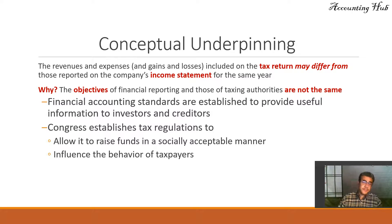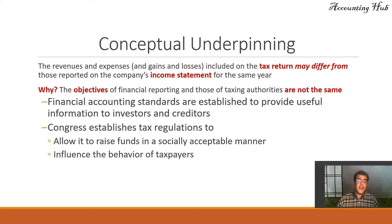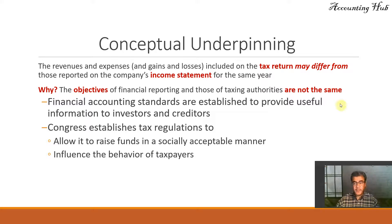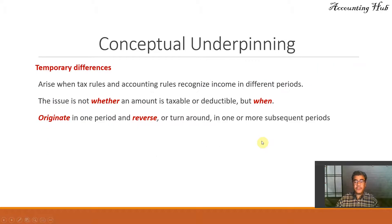Why do we have this difference? Because the objectives of financial reporting and those of taxing authorities are not the same. Financial accounting standards are established to provide useful information to investors and creditors, while tax authorities are looking to raise money to fund the state. That is why we have this difference.